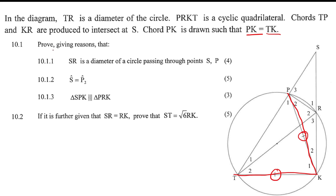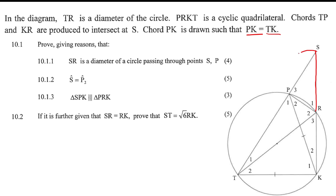The first question says: prove for four marks that SR is a diameter of a circle passing through S and P. If SR is the diameter, then we know that this angle would have to be 90 degrees because of angles on a semicircle.